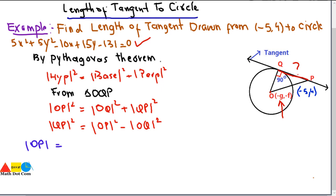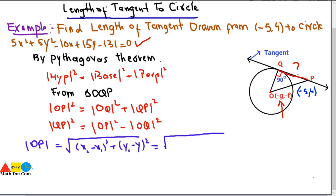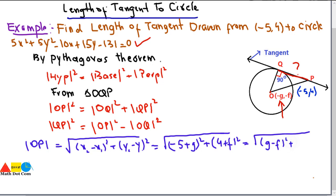We will use the distance formula to find the distance between two points O and P. Using coordinates (X1, Y1) and (X2, Y2), the distance formula gives: OP = √[(X2 - X1)² + (Y2 - Y1)²]. Putting in the values — X2 = -5, X1 = -g — minus minus becomes plus, giving us: OP = √[(-5 + g)² + (4 + f)²]. So we have obtained OP.